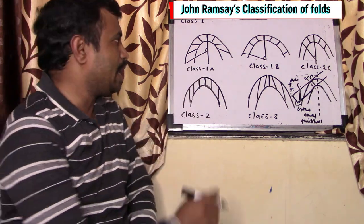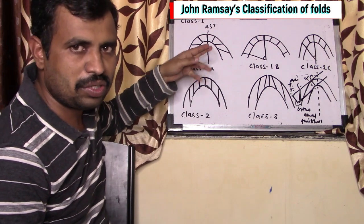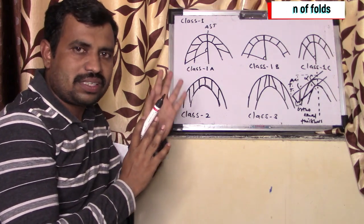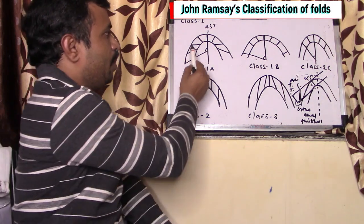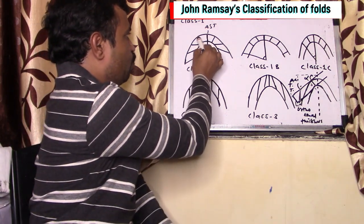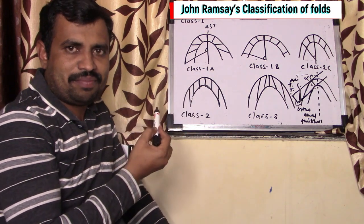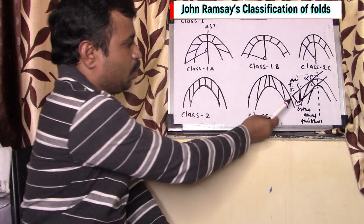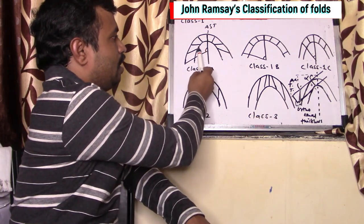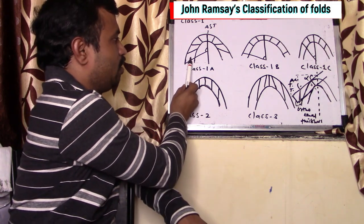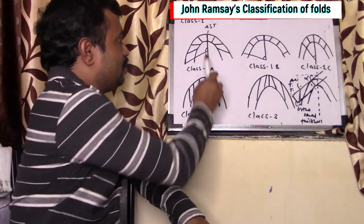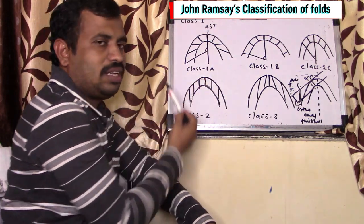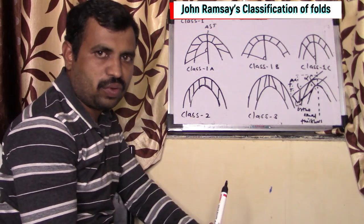In class 1, when we see the line that divides these folds into two equal parts — that is the axial surface trace — and when we look at these isogons, the points having the same dip are identified. In this case, the limbs are thicker. When we see the thickness of the limbs, the thickness here is higher than at the hinges. So the orthogonal thickness increases towards the limb, and such types of folds are called class 1A type folds.